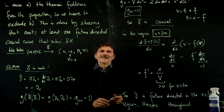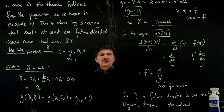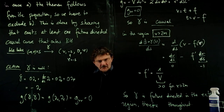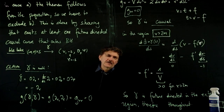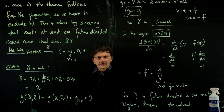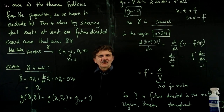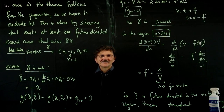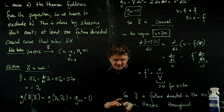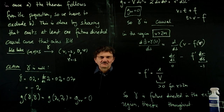We now know that the Eddington-Finkelstein extension of the exterior Schwarzschild solution is a black hole: you can cross the event horizon r = 2m from outside to inside, but you cannot cross back. Once you've entered, you stay there, and you have no choice but to head towards r = 0 — the singularity — where you'll be squeezed in various directions. Please don't go inside a black hole, at least until the next lecture. See you on Thursday.